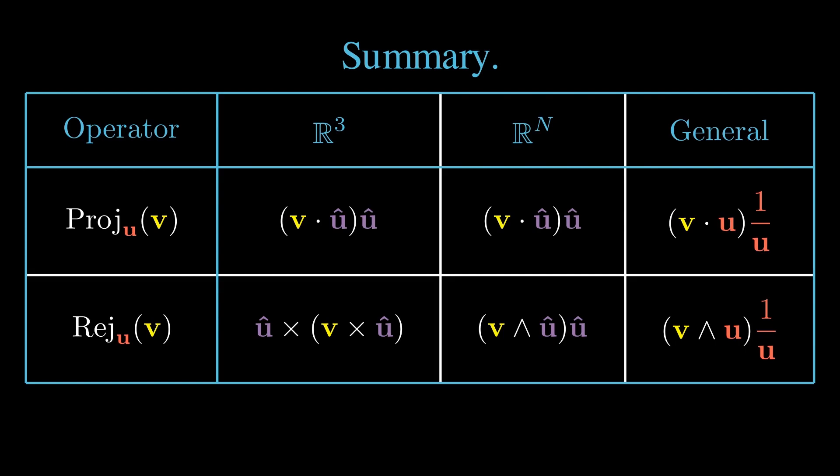For the rejection operator, we have a ladder of increasing generality. The triple cross product form works only in R3. The bi-vector product with u hats works in Rn for any n, including n equals 2. The general form of the rejection operator, again using pairs of u and u inverse, applies to all spaces, including non-Euclidean relativistic spaces that are used in physics and electromagnetism.